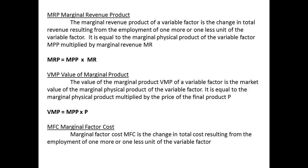We are treating labour as a variable factor of production. The marginal revenue product, MRP, of a variable factor is the change in total revenue resulting from the employment of one more or one less unit of the variable factor. The value of the marginal product, VMP, of a variable factor is the market value of the marginal physical product of the variable factor. It is equal to the marginal physical product times price: VMP equals MPP times P.